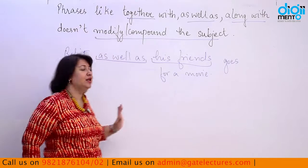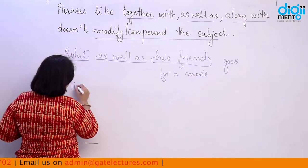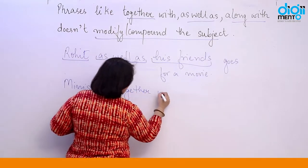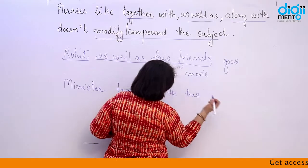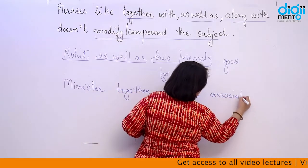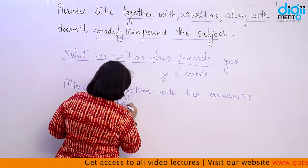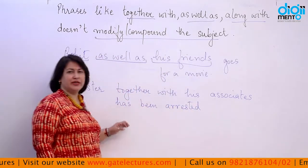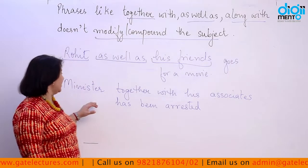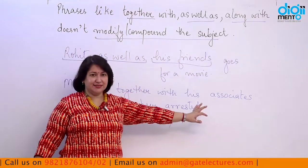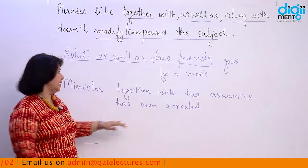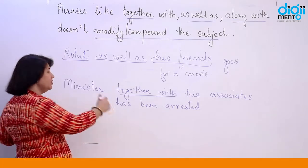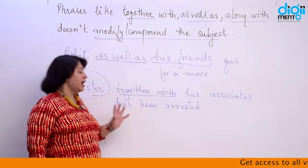Another example: 'A minister together with his associates has been arrested.' Here the sentence is joined using the phrase 'together with,' but we still look at the first subject, which is 'a minister' — a singular subject. Even though 'his associates' is plural, the verb 'has been arrested' remains singular because the first subject is singular.